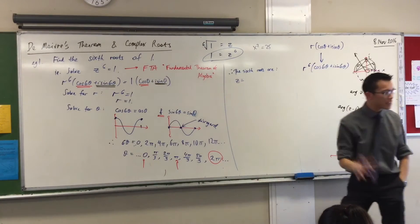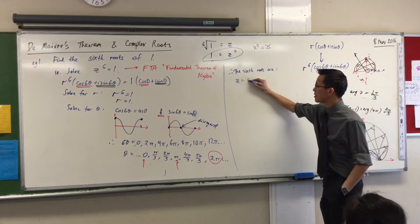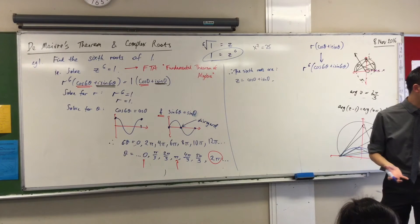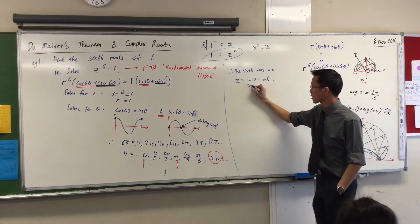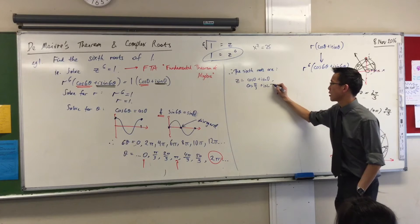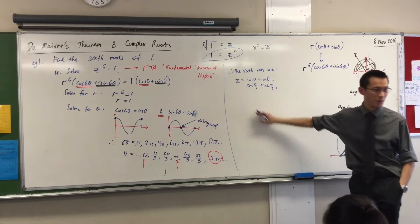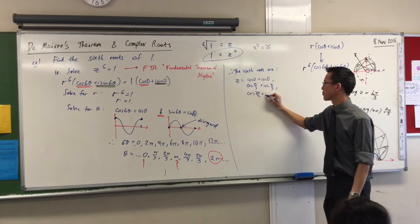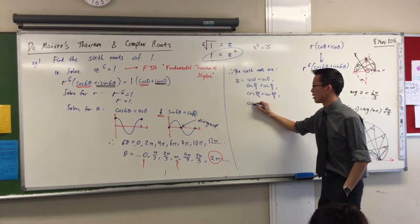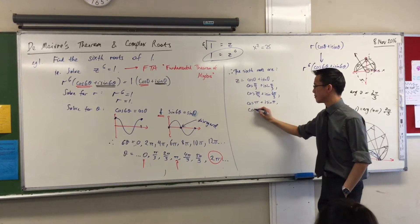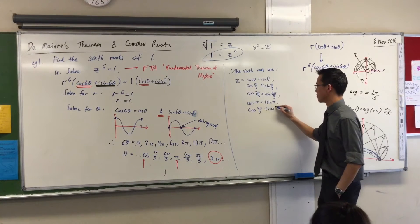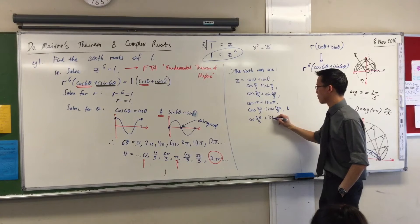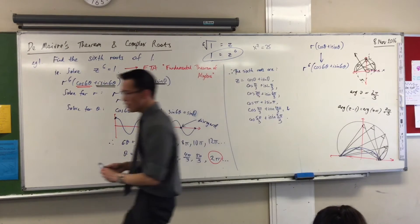Z equals — I'm going to write all of these in polar form first. I can write this as cos 0 + i sin 0, which is just 1. The next one: cos(π/3) + i sin(π/3). Then cos(2π/3). Then cos(π). And so on — it's a bit messy, but you get the idea.